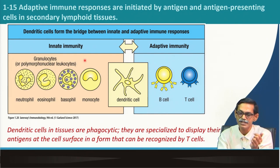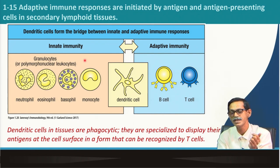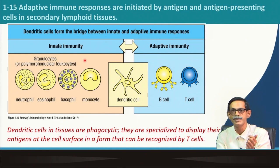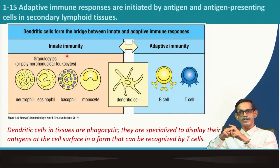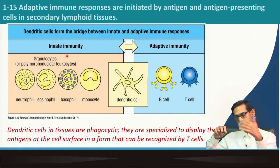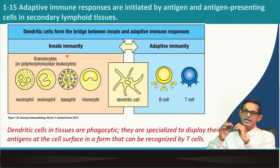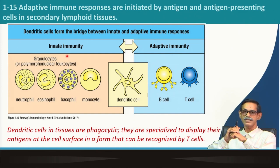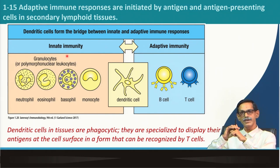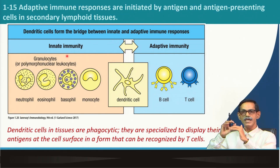From the site of infection where innate immunity plays a major role, dendritic cells bring antigen to the nearest secondary lymphoid organs — mostly lymph nodes, but also the spleen or other sites — making a bridge between innate immunity and adaptive immunity. Dendritic cells are efficient in macropinocytosis. Pinocytosis means drinking liquid and phagocytosis means eating solid material like bacteria. Dendritic cells in tissue are phagocytic and are specialized to display their antigen at the cell surface — this is why they are antigen presenting cells.